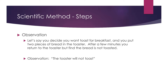The first step of the scientific method is called observation. Let's say you decide you want toast for breakfast and you put two pieces of bread in a toaster. After a few minutes you return to the toaster and find that the bread is not toasted. Your observation is what you see in the real world in any particular situation — in this case, the fact that the toaster will not toast.